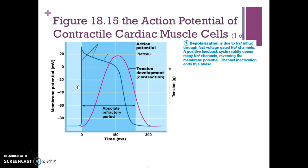Figure 18.15 further explains the action potential of contractile cardiac muscle cells visually. Their action potentials are very different from what we've seen previously — it starts low, then goes straight up with no ramping, then decreases to a plateau. First we see depolarization due to sodium influx through fast voltage-gated sodium channels. A positive feedback cycle rapidly opens many sodium channels, reversing the membrane potential — that's why it's a straight vertical line.